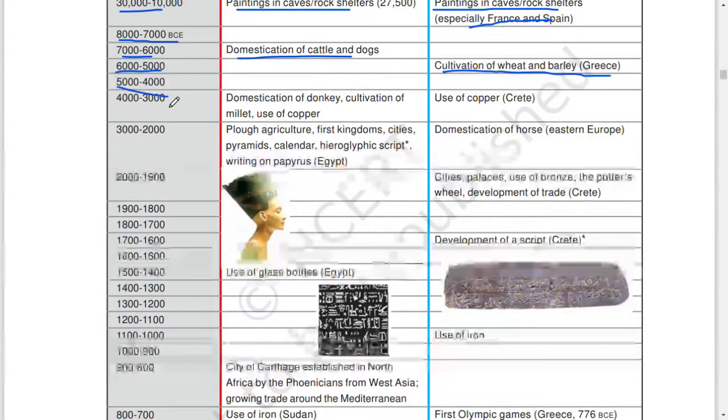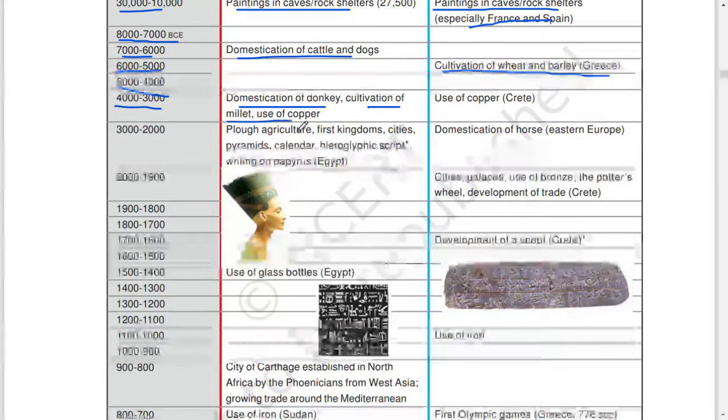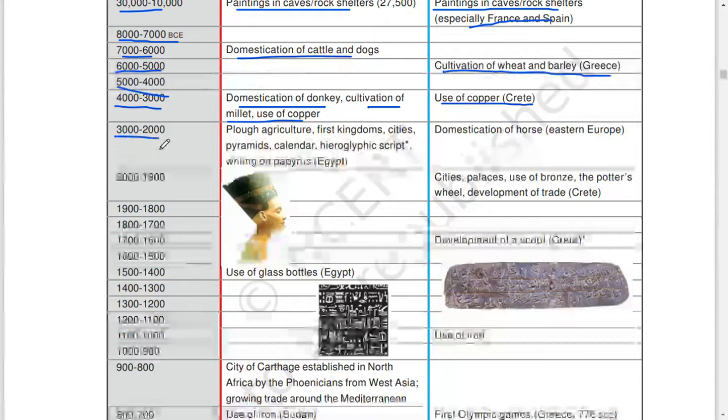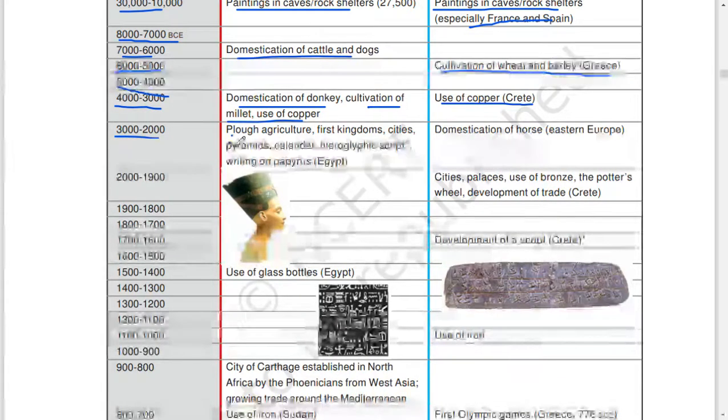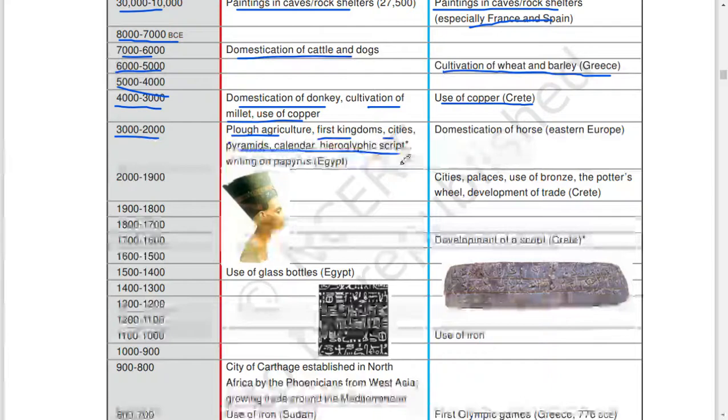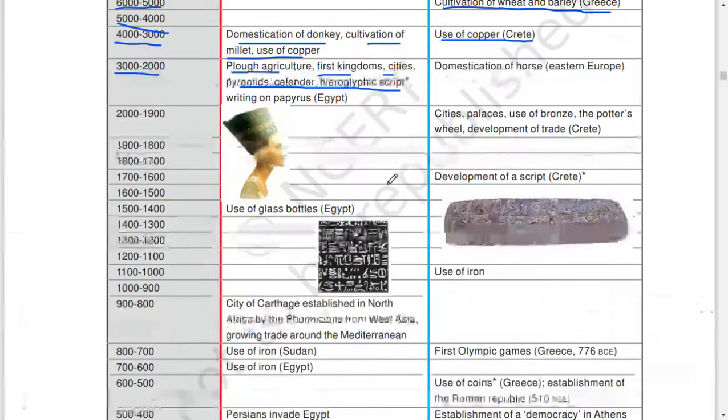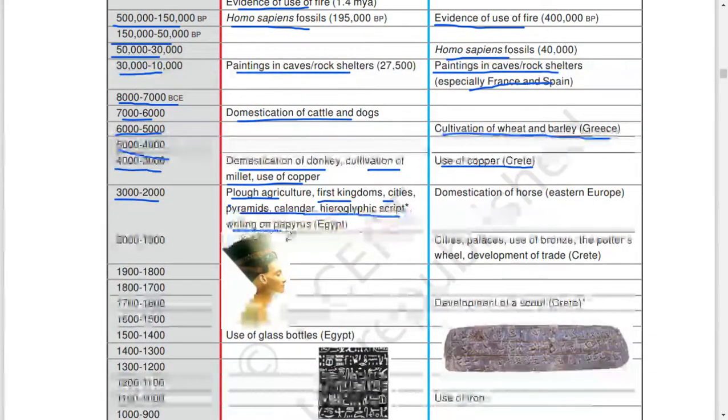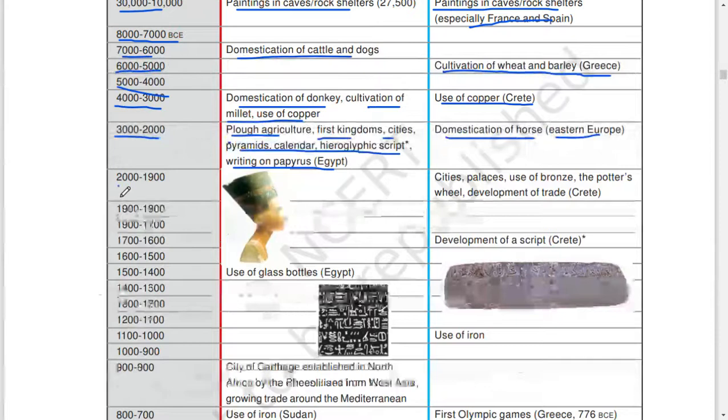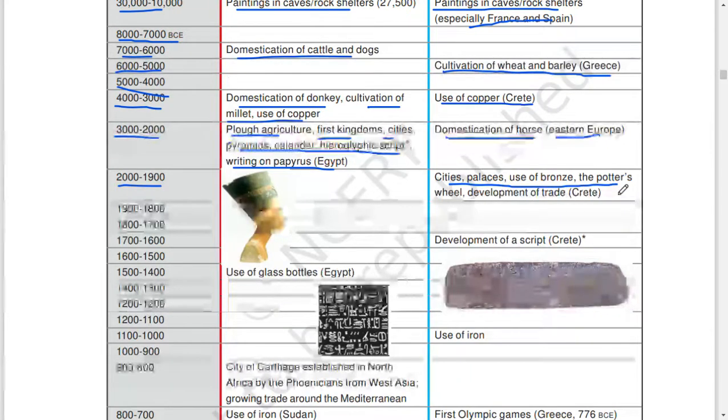6000 to 5000: cultivation of wheat and barley, Greece. 5000 to 4000: domestication of donkey, cultivation of millet, use of copper. 4000 to 3000: use of copper, Crete. 3000 to 2000: plough agriculture, first kingdoms, cities, pyramids, calendar, hieroglyphics, writing on papyrus, Egypt. Domestication of horse, Eastern Europe.